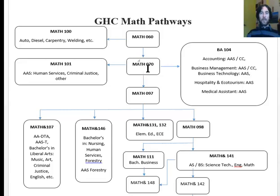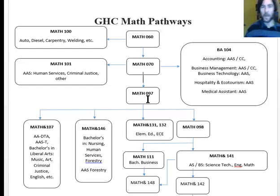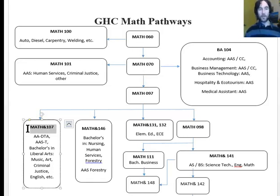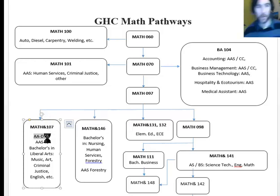Math 70 leads to Math 97, which is mostly Algebra 1 type material — Essentials of Intermediate Algebra. That then leads to Math 107, Math and Society, which is for Liberal Arts majors. Think Music, Art, Criminal Justice, English, and many more. This will count towards a Bachelor's Degree in many of these majors and also the Associate of Arts Direct Transfer Agreement.